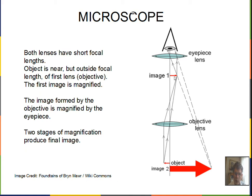Image one is a real image, and with the case of a shorter focal length here, this would be a more magnified first image. So our objective lens forms a magnified first image. This first image is the object for the second lens, for the eyepiece lens.